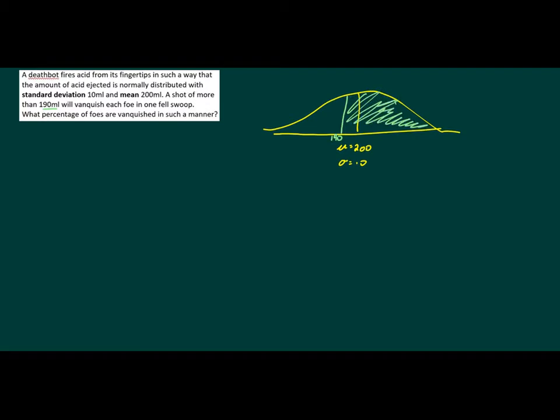Now we know that because that's over half of the normal distribution curve, we're going to expect an answer that's more than a half. But anyway, so let's just write down our probability statement: the probability that X is greater than 190 mls is equal to.